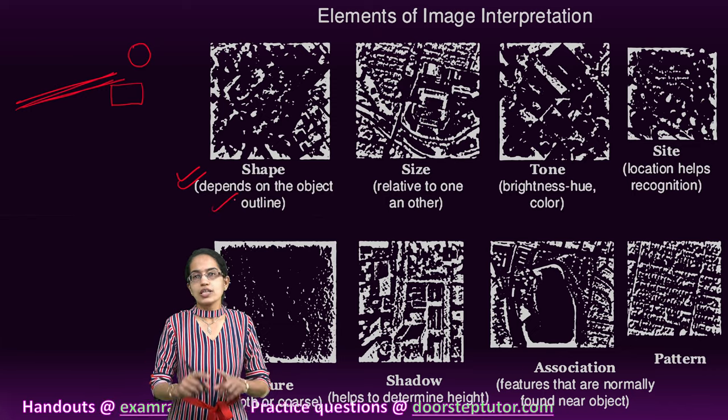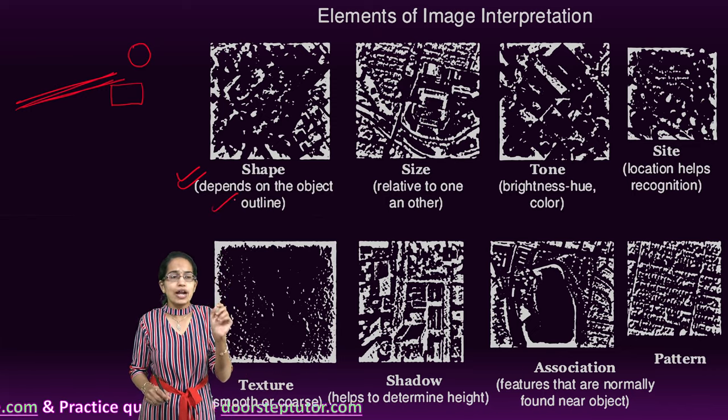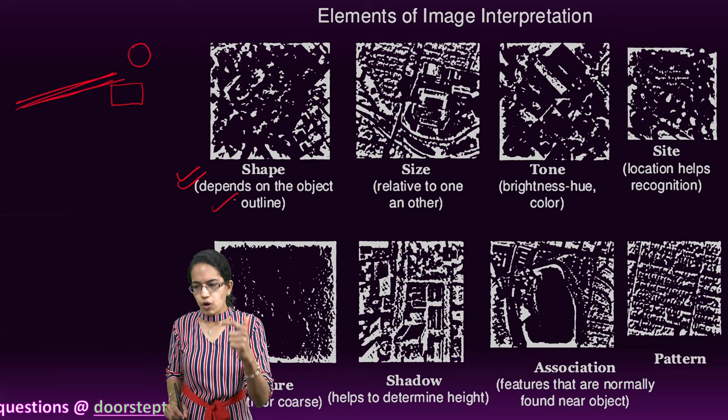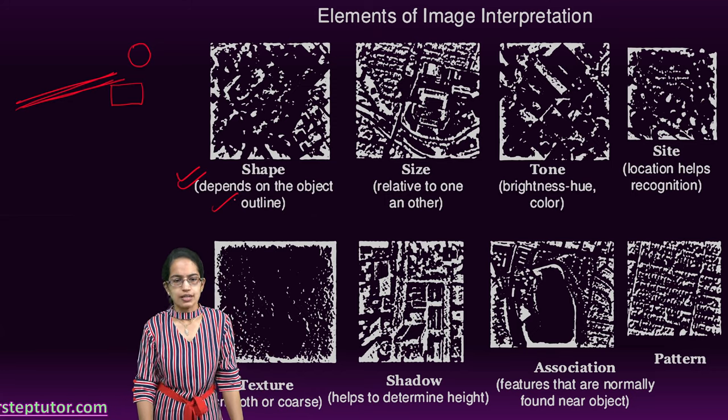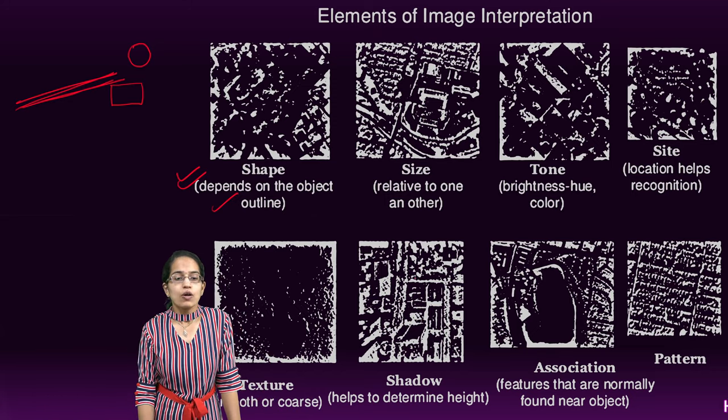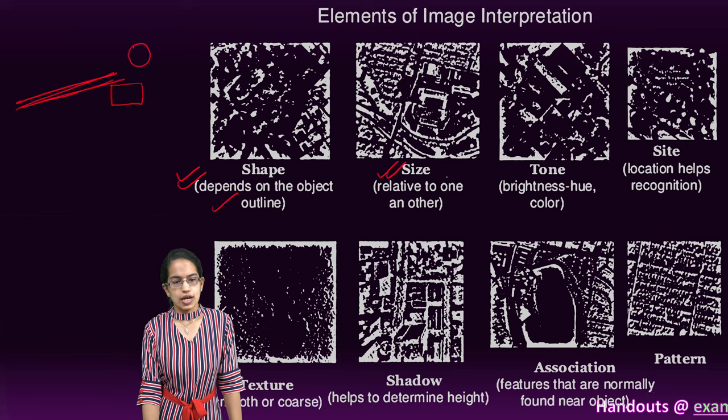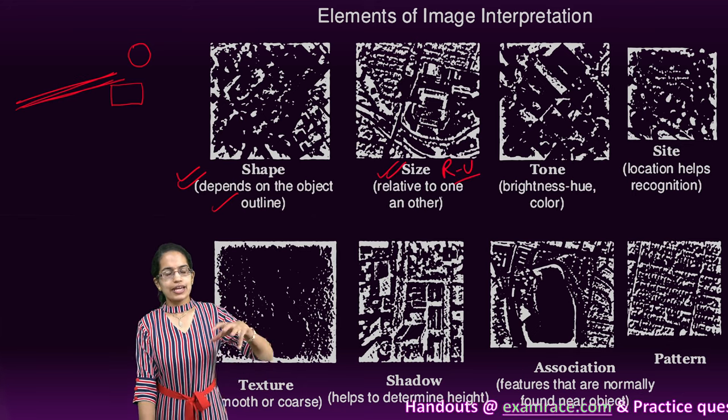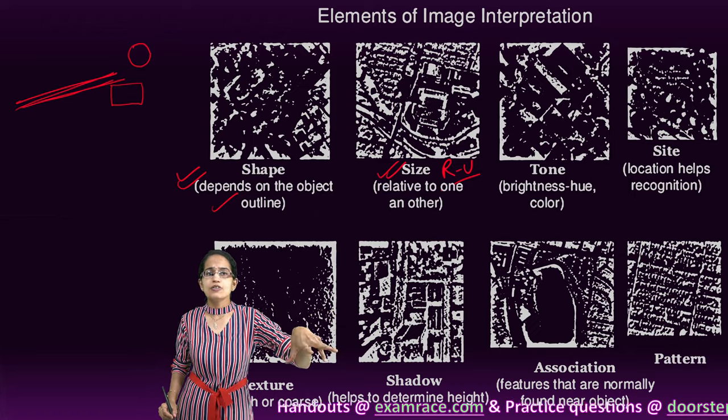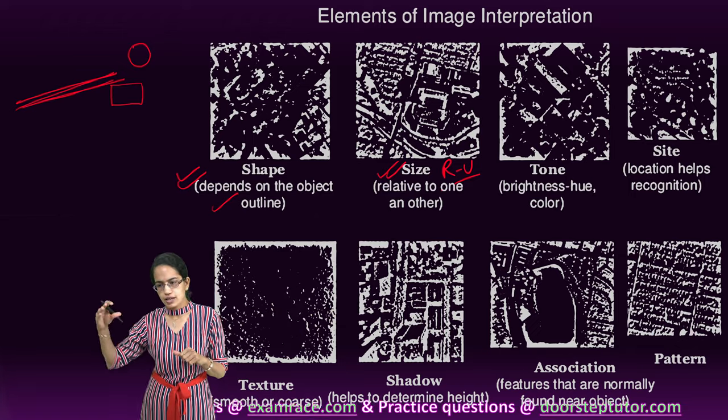Shape depends on the outline of the object and that helps us to understand what kind of object would be actually there. The size explains what it is relative to other. Rural area versus an urban area, I can see more green patches in a rural area in contrast to an urban area.